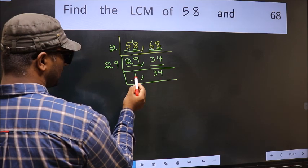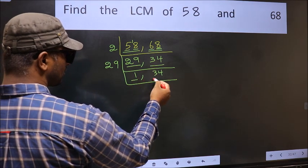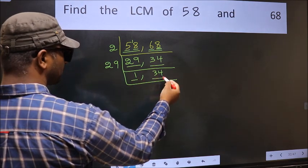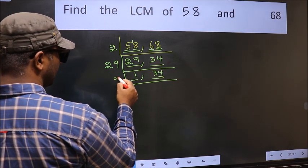Now we got 1 here. So focus on the other number, 34. Last digit 4, even. So take 2.